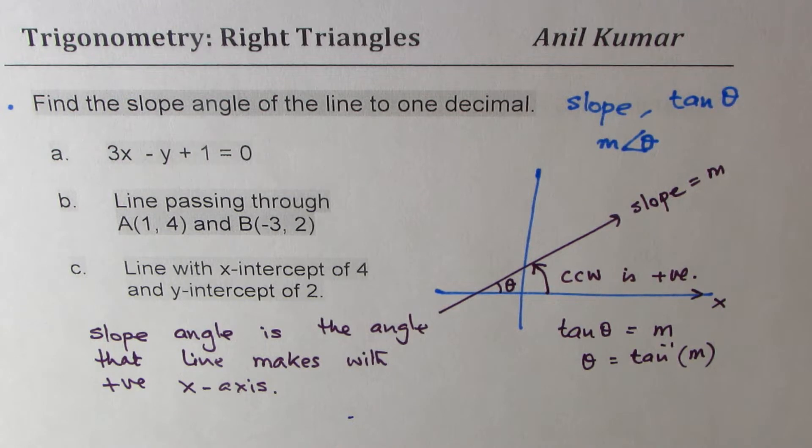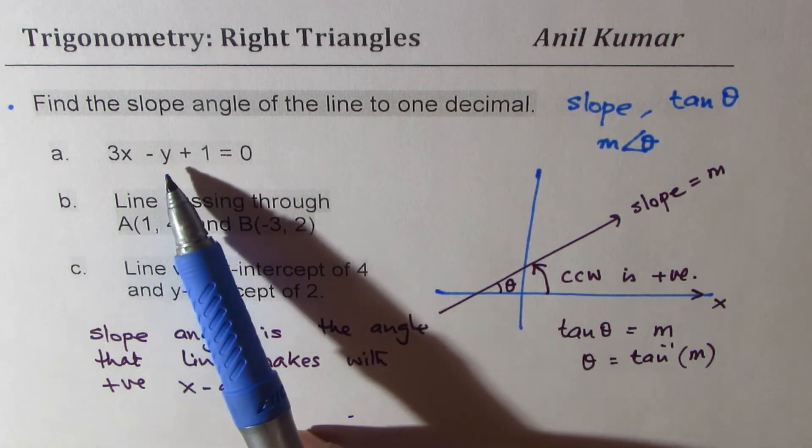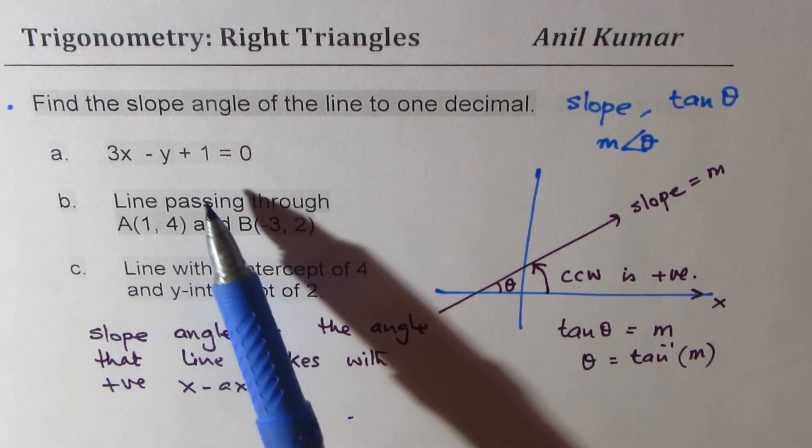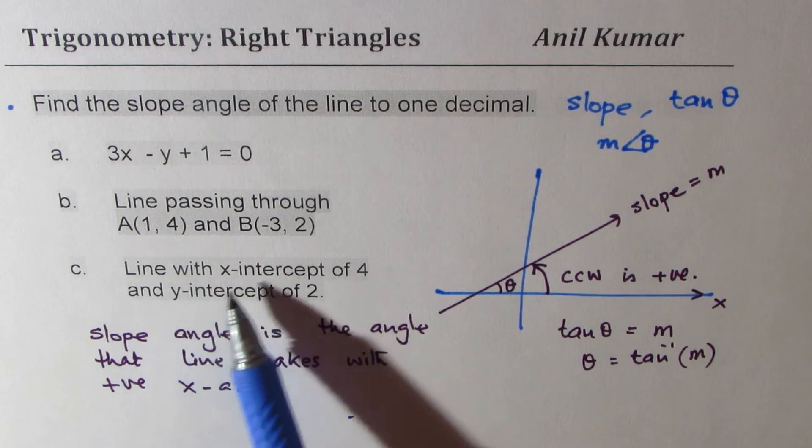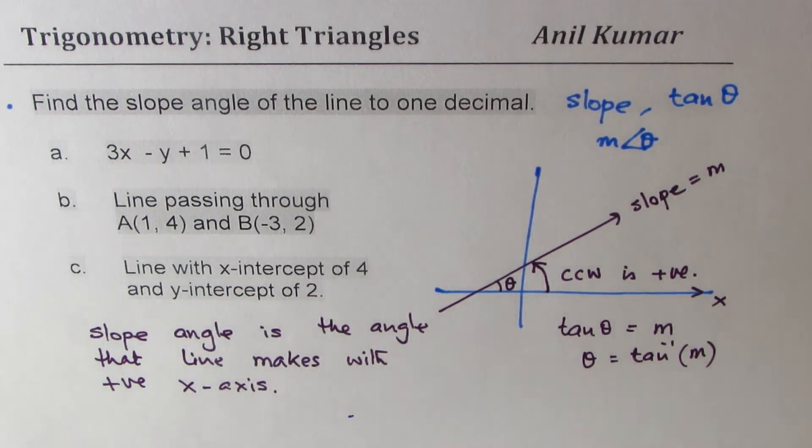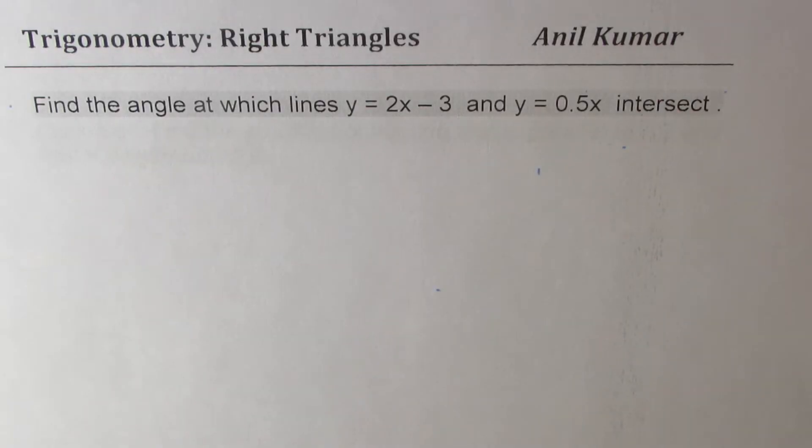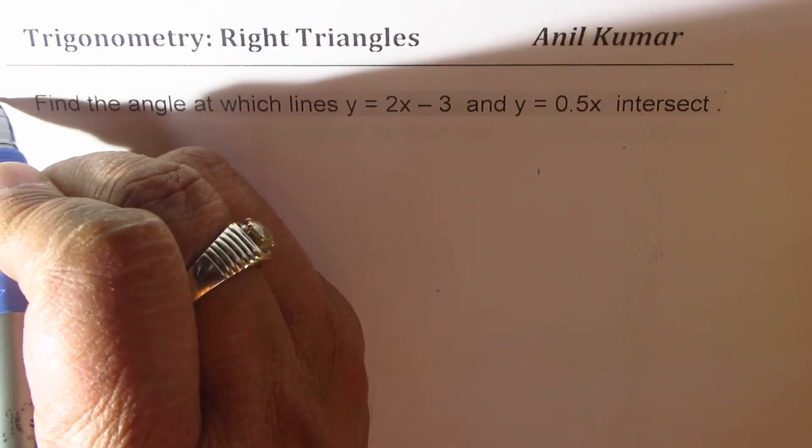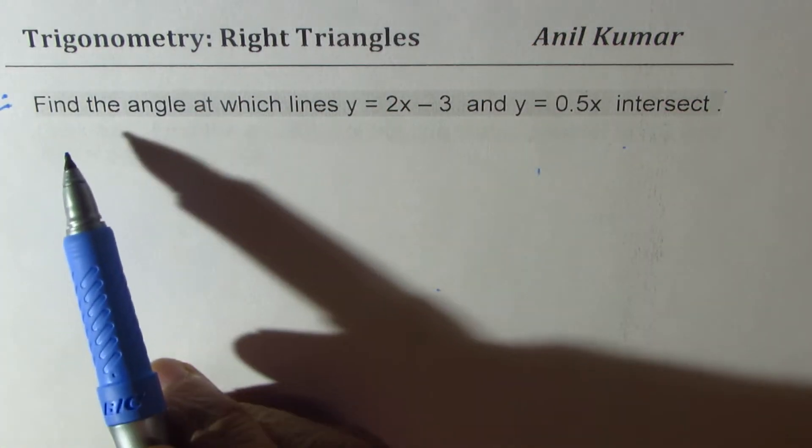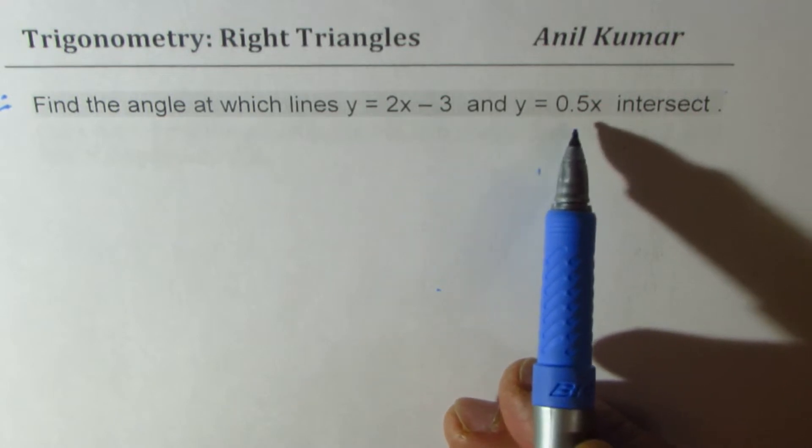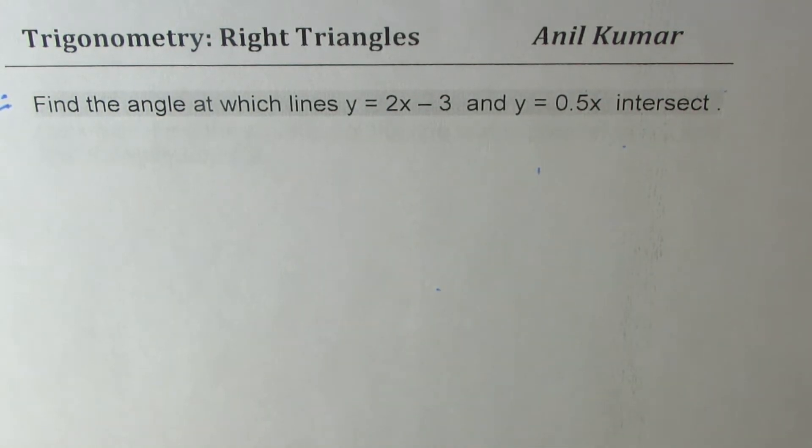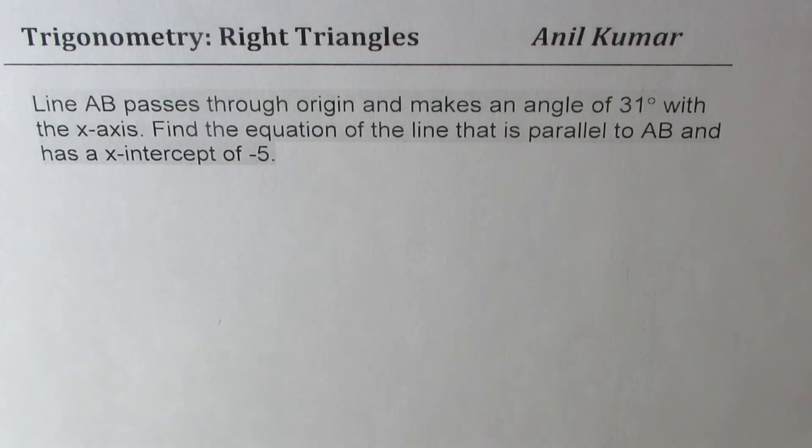Now let's take these examples one by one. We'll consider a simple equation of line in standard form 3x minus y plus 1 equals 0. Then we'll have a line passing through two points, and then we'll have a line which passes through x-intercept and y-intercept. There's also a question about finding the angle at which the lines y equals 2x minus 3 and y equals 0.5x intersect. We'll take it at the end as one of your test questions.